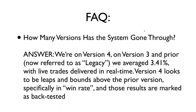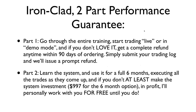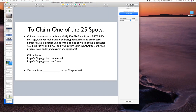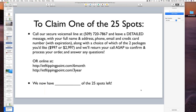How many versions has the system gone through? We're on version four. In version three and prior — referred to as legacy — we averaged about 3.41% with live trades delivered in real time. Version four looks to be leaps and bounds above the prior version, specifically in win rate, and those results are marked as back-tested. To order: call 509-720-7867, or go online to etftippingpoint.com/six-month or etftippingpoint.com/three-year. Thanks to Traders Talk Live for having me on.